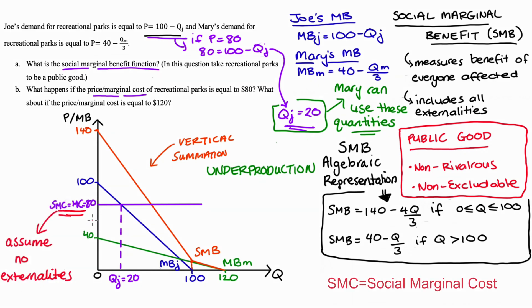And this means that our socially efficient amount that we should be producing is actually here where our social marginal benefit curve is equal to our social marginal cost curve.